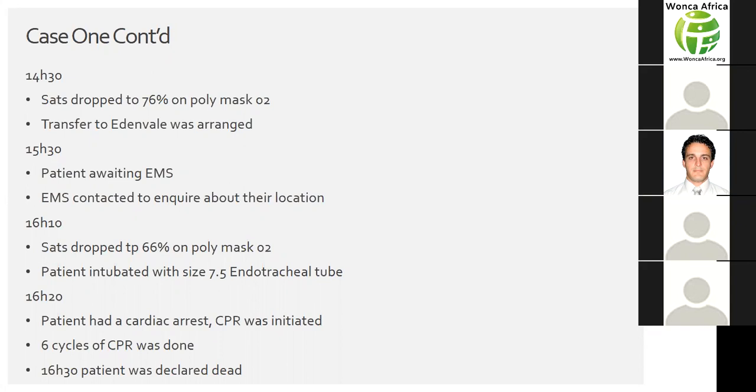At 2:30 PM, SATs dropped to 76% on polymask with O2. Definitive arrangements were made with Edenvale for transfer. At 3:30, still waiting for EMS — EMS was contacted to say the patient was deteriorating. At 4:10, SATs dropped to 66% on polymask and the patient was intubated. At 4:20, the patient entered cardiac arrest and CPR was initiated — six cycles completed. At 4:30, the patient was declared dead.